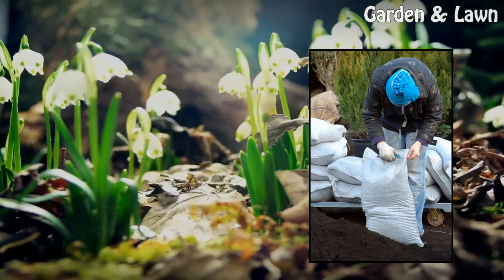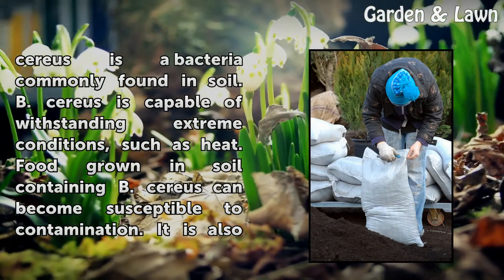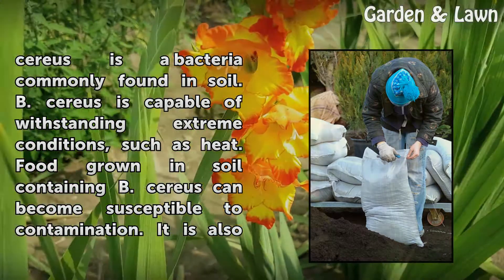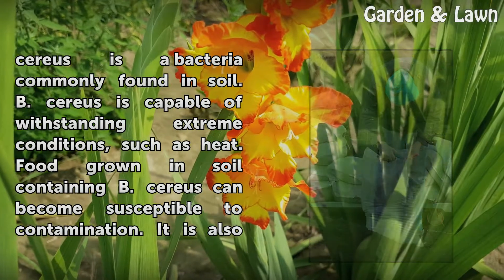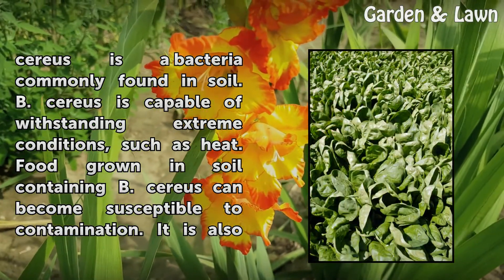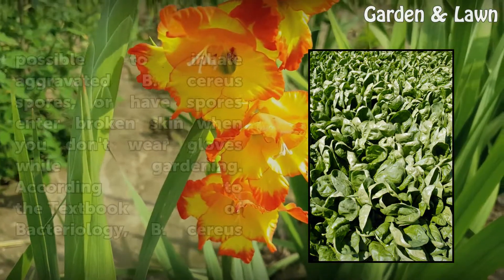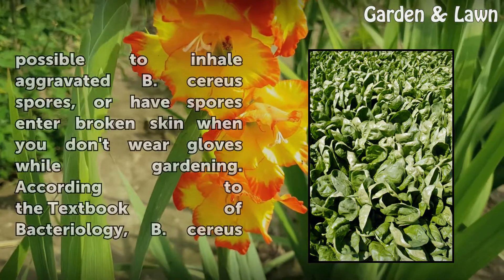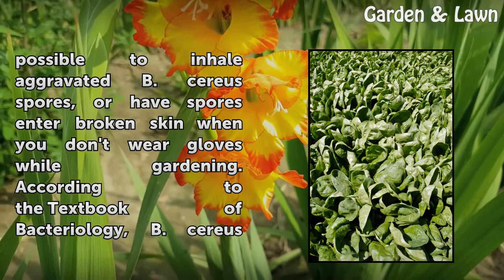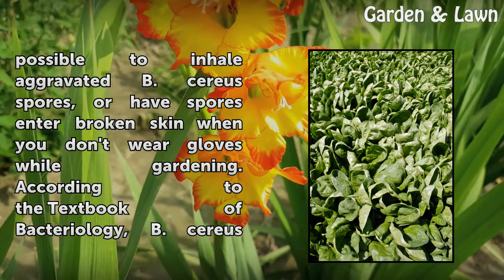There are a few varieties of Bacillus. Bacillus cereus is a bacteria commonly found in soil. B. cereus is capable of withstanding extreme conditions, such as heat. Food grown in soil containing B. cereus can become susceptible to contamination. It is also possible to inhale aggravated B. cereus spores, or have spores enter under broken skin when you don't wear gloves while gardening.